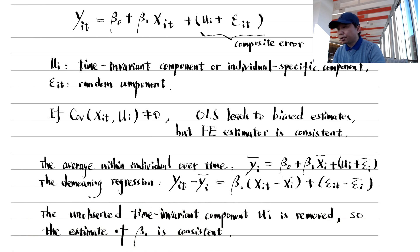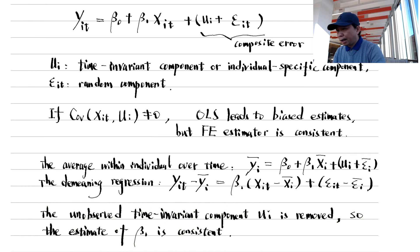The method is called the fixed effects demeaning method, and the resulting estimator is called the within estimator because we transform data within each individual — we subtract the individual mean within each individual panel. The demeaning method runs much faster than the fixed effects dummy variables method and does not require additional assumptions about the fixed effects and random component. However, time-invariant variables such as educational attainment and gender are also removed, so we cannot estimate the gender gap or education effect on wages using this method.